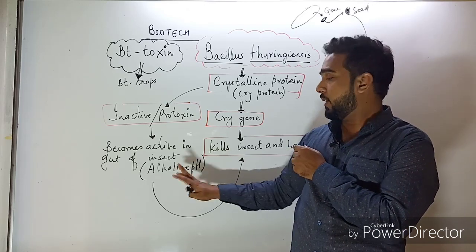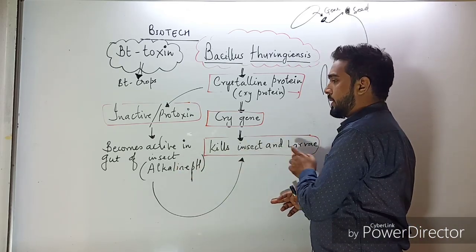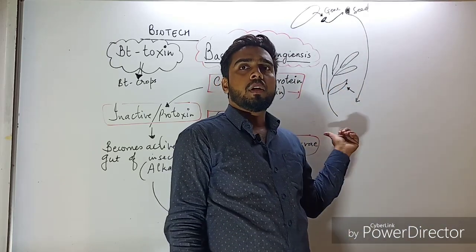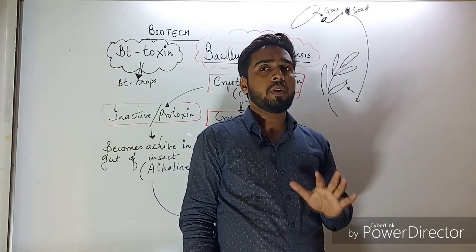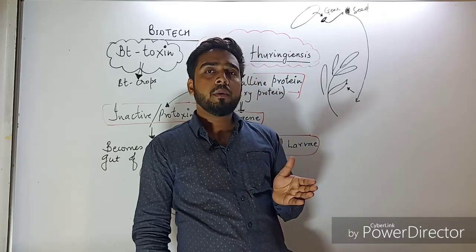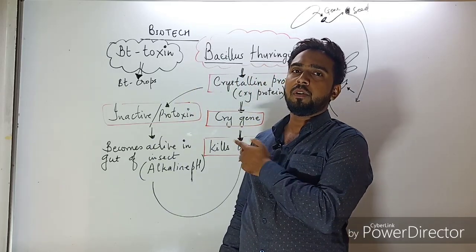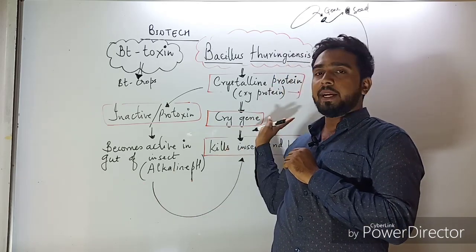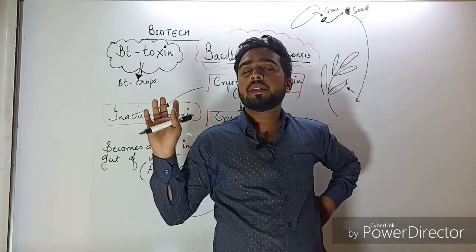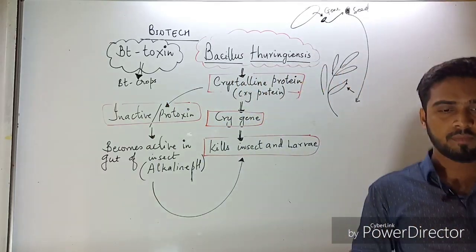In this way, farmers can get rid of insects because the insects are killed by the cry protein produced in the genetically modified plant.